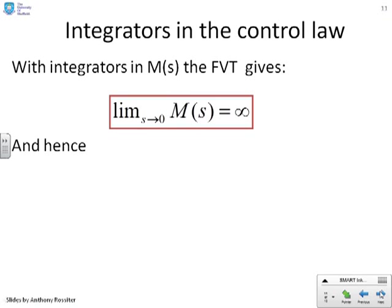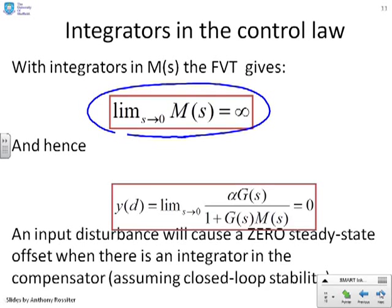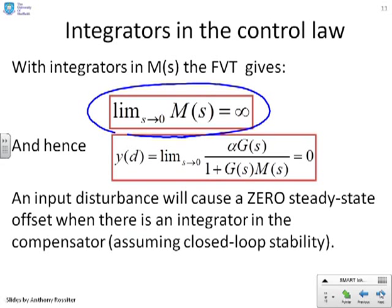Finally, then, let's consider what happens if we put an integrator into the control law. Now, the final value theorem gives us this. The limit as S goes to 0 of M of S is infinity. So if I go back to the original formula, Y of D is the limit as S goes to 0 of alpha G over 1 plus GM. And in this particular case, you'll notice that it's M of S, which is going to infinity, not G. And therefore, you're going to get 0. An input disturbance will cause a 0 steady-state offset when there is an integrator in the compensator. Obviously, as ever, assuming closed loop stability.